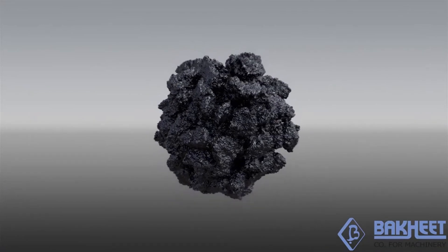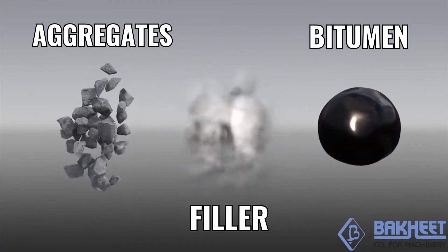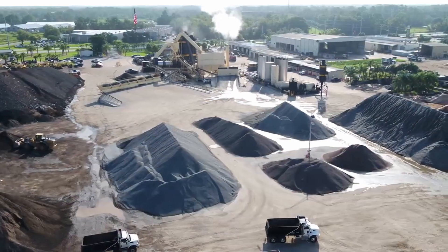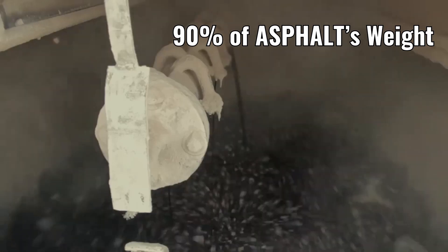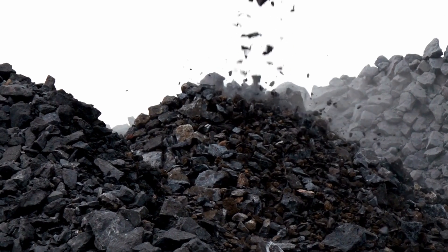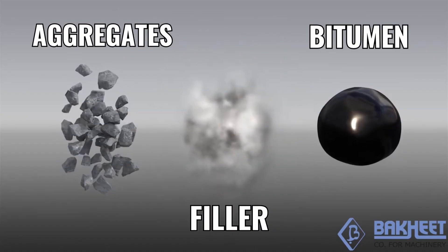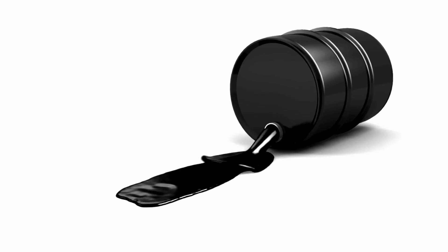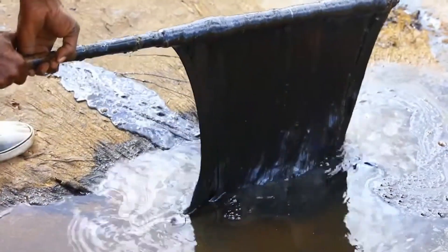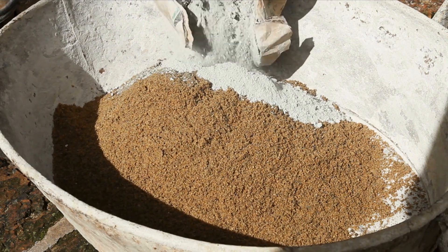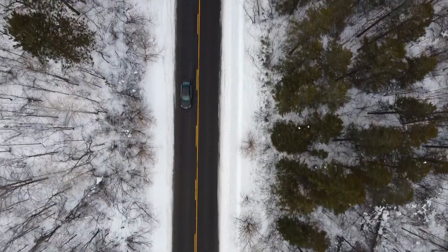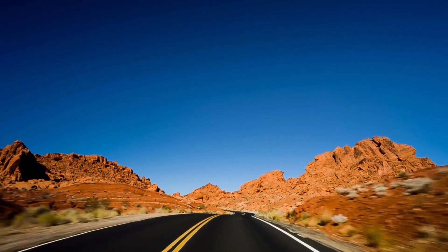Asphalt is composed of three key ingredients: aggregates, bitumen, and filler materials. Aggregates provide the bulk and strength to asphalt concrete, acting as a rocky skeletal structure. They account for over 90 percent of an asphalt mixture by weight. The most commonly used aggregates are crushed stone, gravel, and sand. Bitumen is produced through the distillation of crude oil during petroleum refining. Its viscosity allows it to serve as an effective binder, holding aggregates together and helping asphalt resist weathering. Filler materials like stone dust or Portland cement fill voids between aggregates that bitumen cannot, improving cohesion, reducing temperature susceptibility, and granting better durability and strength.